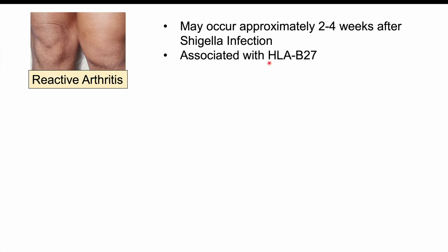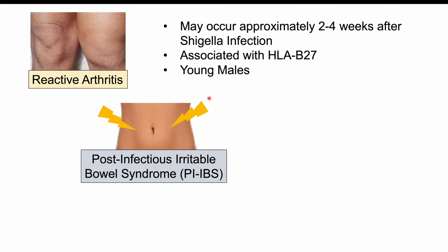Reactive arthritis is associated with HLA-B27 and is more commonly seen in young male patients. Some patients can also develop post-infectious irritable bowel syndrome.